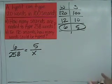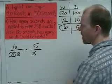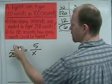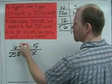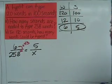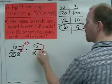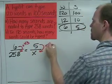And we don't know how many seconds, so we're going to put an x right there. And I can see that 6 times 43 is 258. And since 6 times 43 is 258, over here I'm going to do 5 times 43.